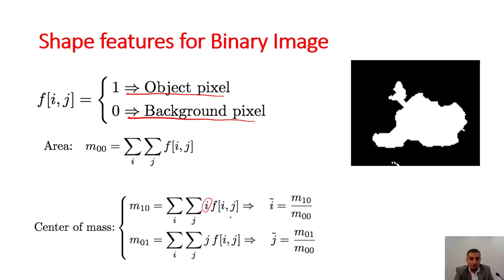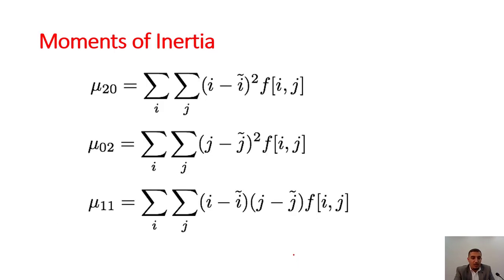We can find the center of mass by multiplying the row value by the value, whether it's zero or one. Then we can find m10 and m01, and then i-dash and j-dash, which is m10 over the area and m01 over the area. We can also find the moments of inertia: μ20, μ02, and μ11. One is for the row, one is for the column, and one is for the diagonal. These are the moments of inertia.